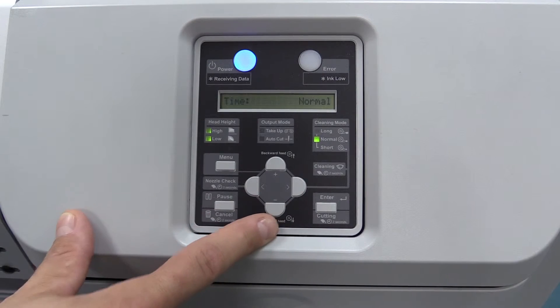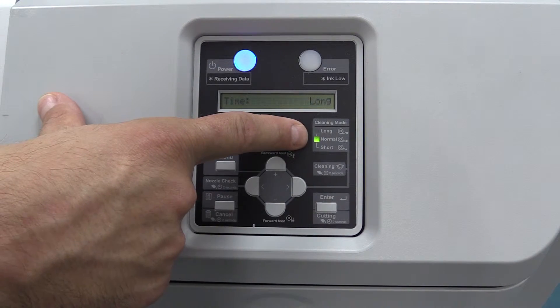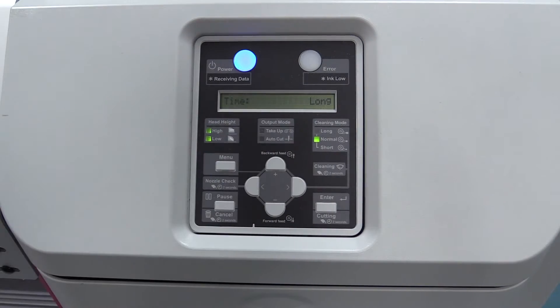The first three are Short, Normal and Long. Those are the same as the cleaning cycles you see from the main control panel, which is simply the length of the cleaning cycle itself.